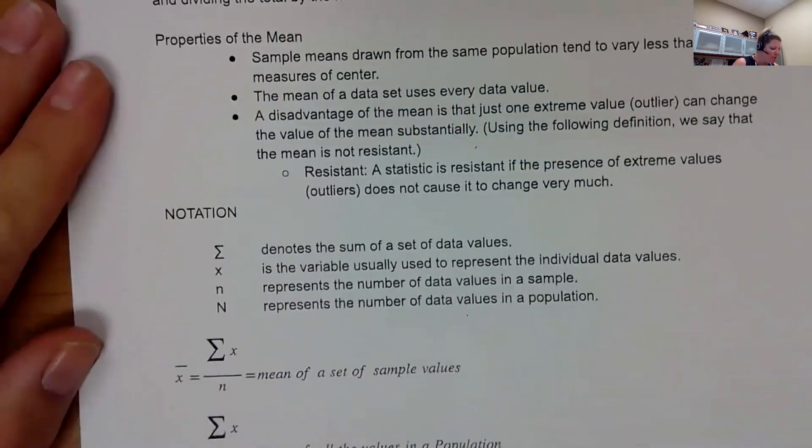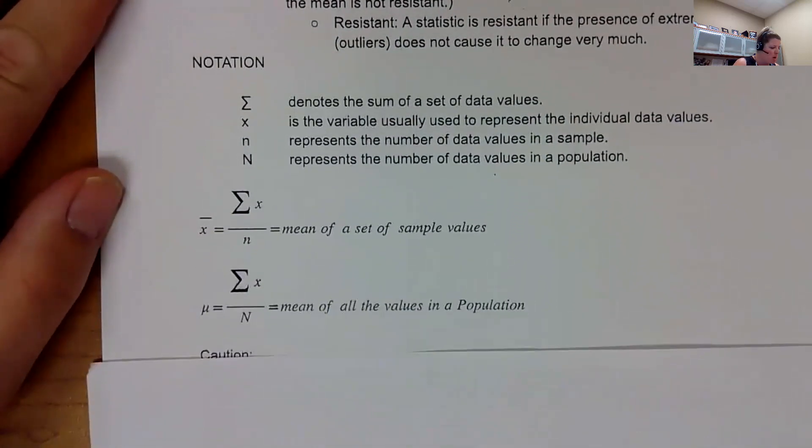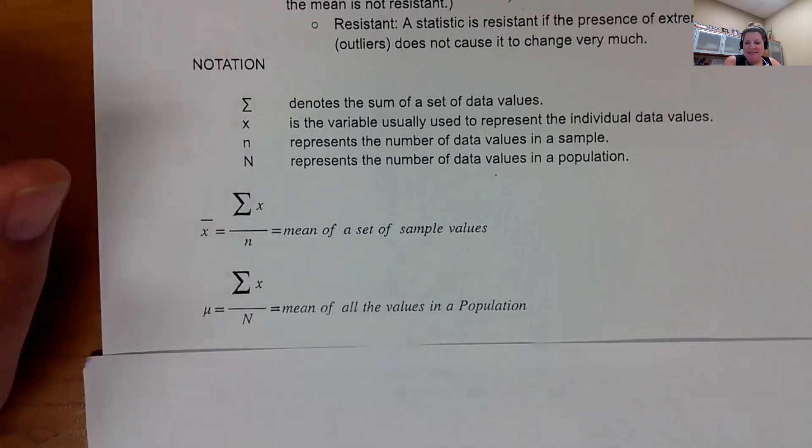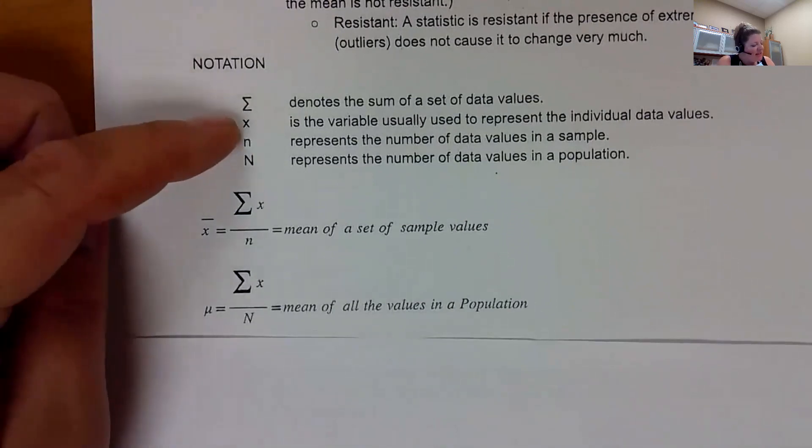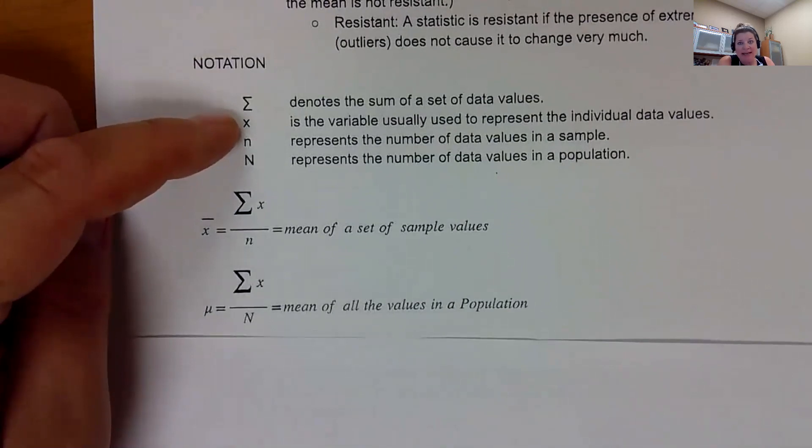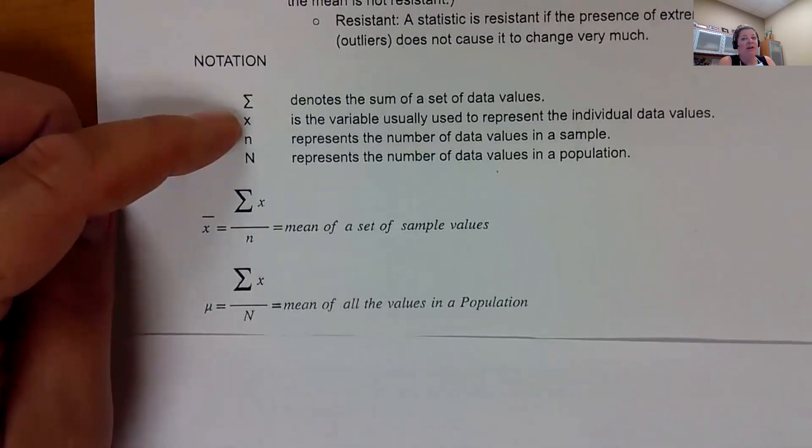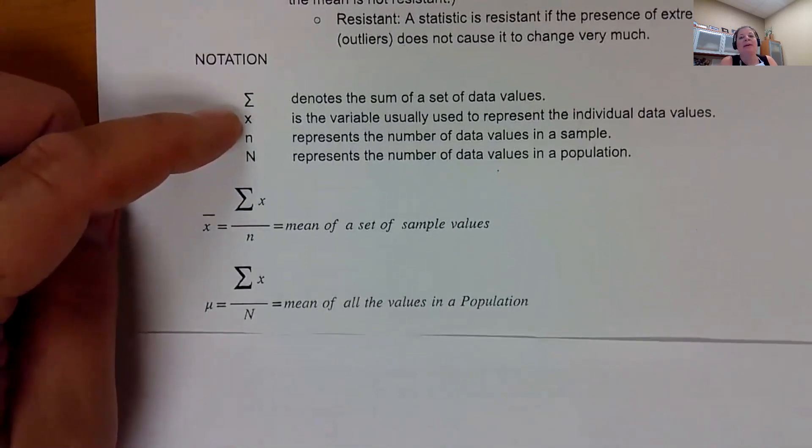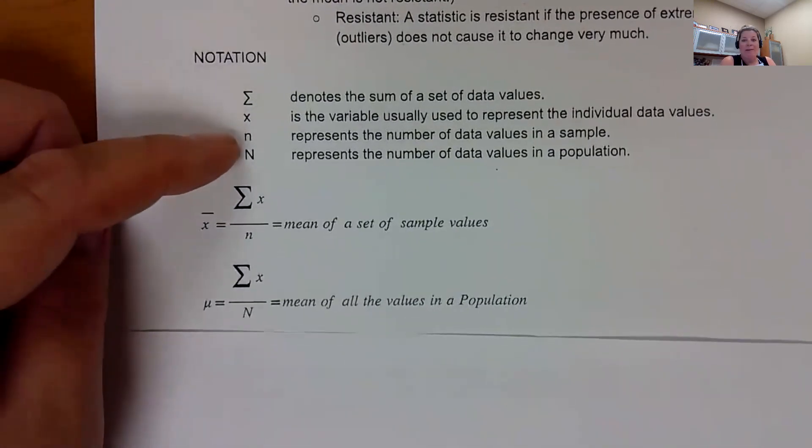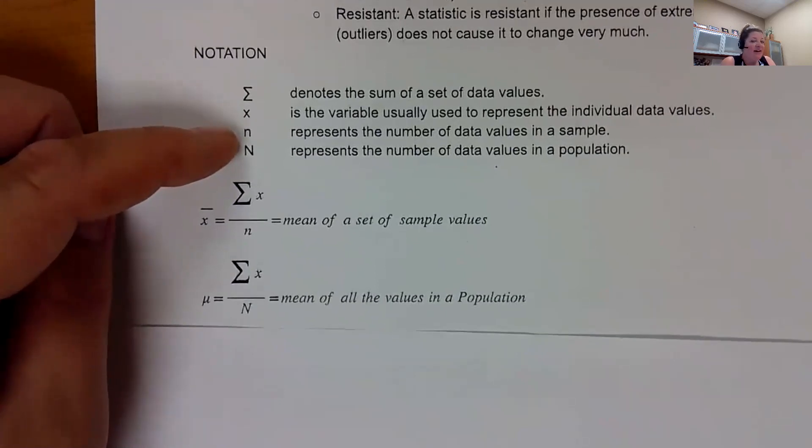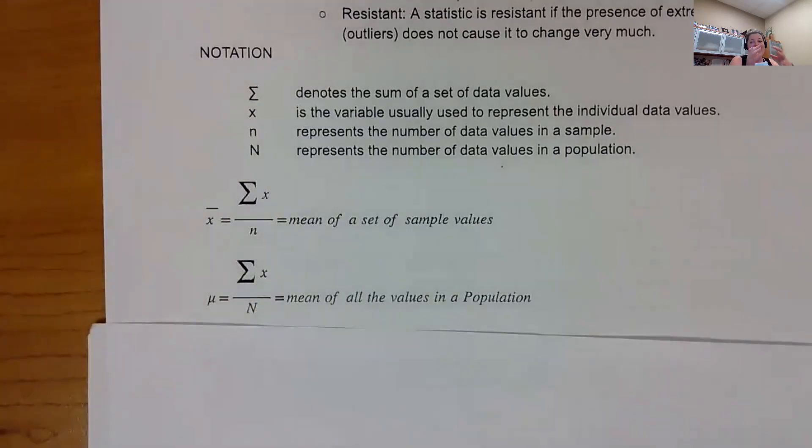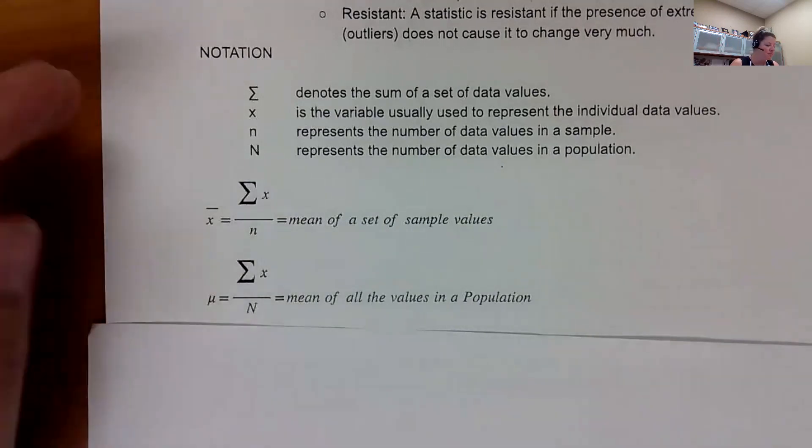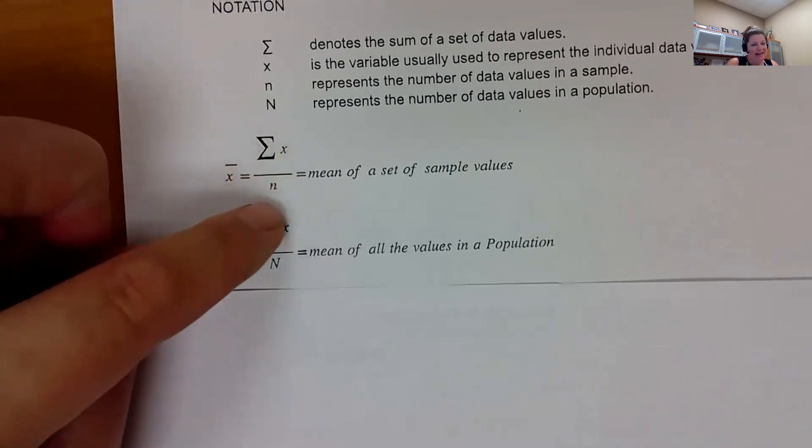So the notation is a little bit different. We have this kind of fancy E, sigma, and that means to add something up, the sum of a data value. X typically means the actual data value. N represents the number of data values in your sample. Capital N represents the entire population. You don't see capital N hardly ever. We will see N and you need to know it is the number in our sample.